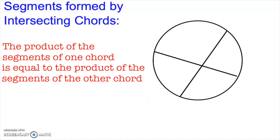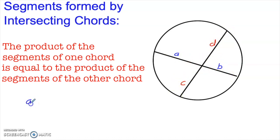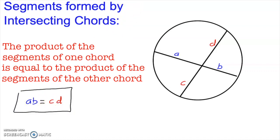That sounds a little bit wordy, but if I go ahead and label some things, you can see it's real simple. Let's call those two pieces A and B, and let's call those two pieces C and D. So A and B are two segments of one chord, C and D are the two segments of the other chord. All we're saying is that the product of the segments of one chord, A times B, is equal to the product of the segments of the other chord, C times D. This relationship holds any time you have a circle with two chords that intersect anywhere in that circle.